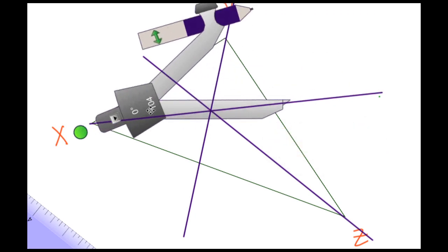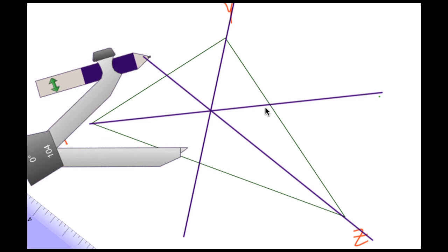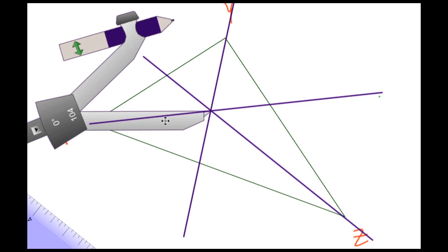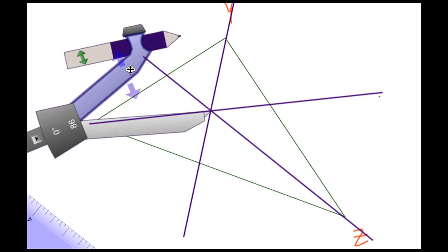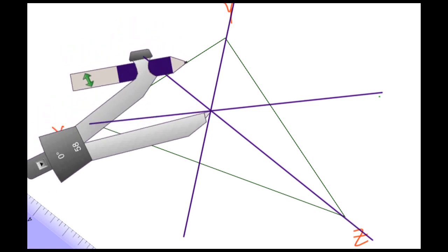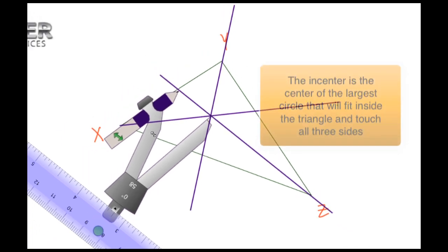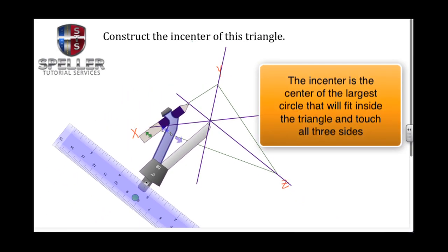We do that by placing the pointy end of the protractor on our incenter. Then we're going to set the radius of the compass to be the same as the distance from the incenter to where one of these angle bisectors touches the side.